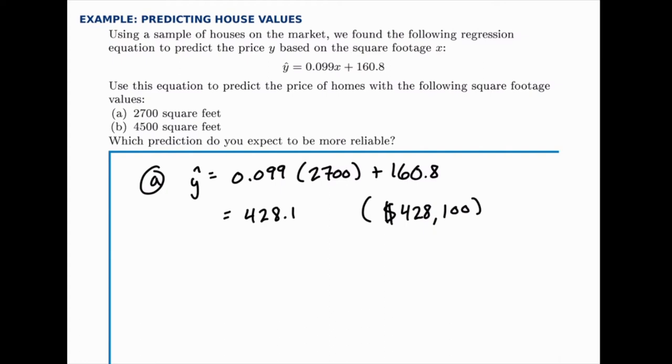And then in the second case, we can make a similar prediction for houses with 4,500 square feet. And that works out to just over $600,000.